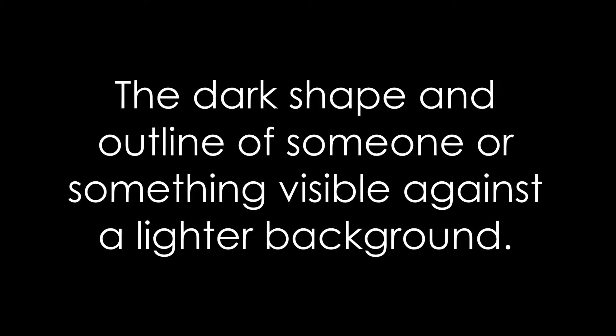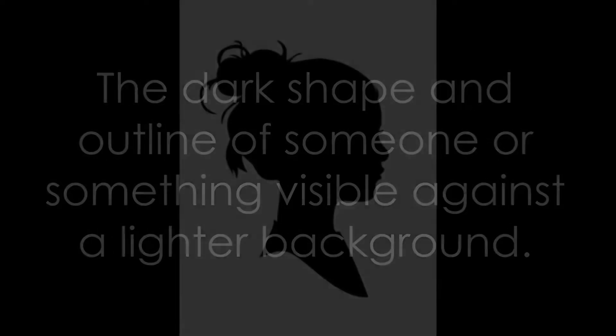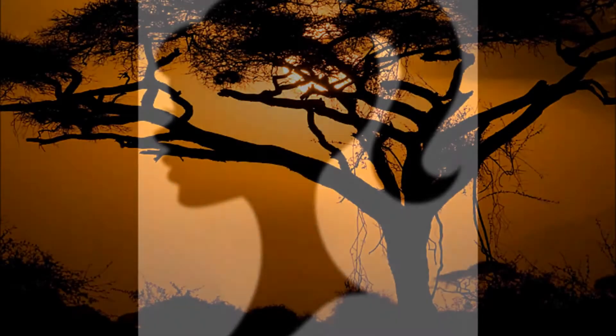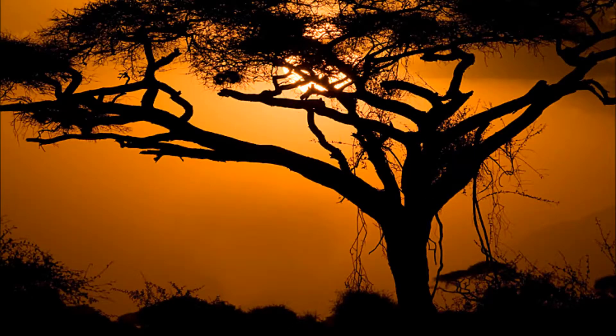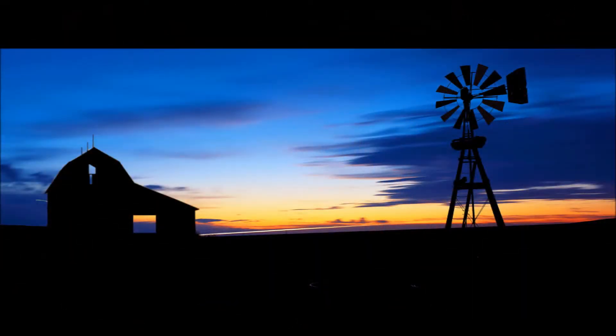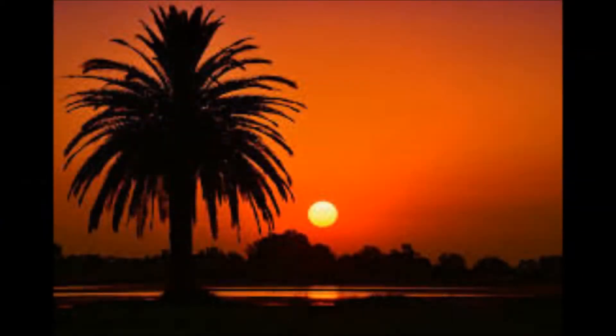Silhouettes. They are the dark shape and outline of someone or something visible against a lighter background. Here you can see the outline of these people's faces. It is dark, no detail, just the outline. Here are some real-life silhouettes with dark images with lighter backgrounds.